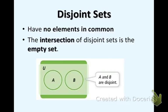Disjoint sets is another type of set. It is disjoint if you have two sets and they're disjoint from each other, that means that there are no elements in common. None whatsoever.